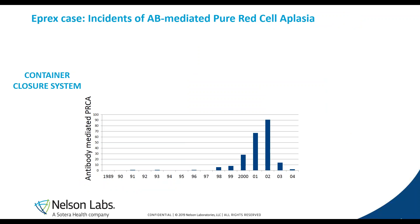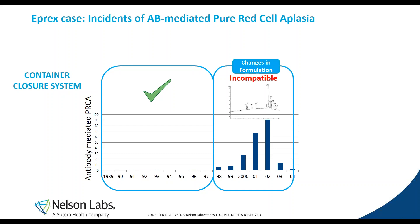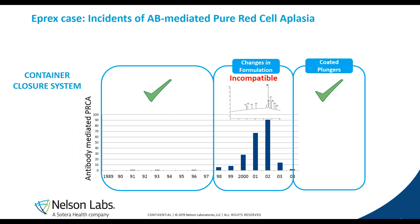Back to the Eprex case. The container closure system was compatible with the old formulation with human serum albumin, but was found to be incompatible when the formulation changed to polysorbate 80. This incompatibility was linked to the different leachable pattern observed. Once recognized, the pharma company changed their plunger components to a coated version, which clearly resulted in a drop in the incidence of antibody-mediated pure red cell aplasia. These levels went back to normal, so it was clearly linked to the interaction of materials with the drug product and one or more of the detected leachables.